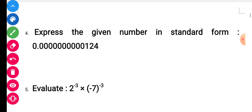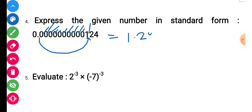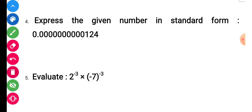Question number 4: express the given number in standard form. You need to convert it to standard form. Shift the decimal to the left until you have one digit before the decimal. Counting the places: 1, 2, 3, 4, 5, 6, 7, 8, 9, 10, 11. So your answer is 1.24 into 10 to the power minus 11. This is the required standard form.